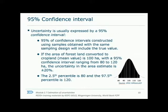What I was talking about before — the region that we believe the estimates to be within on a certain confidence level — is also known as the confidence interval, often expressed as a 95% confidence interval. This means that 95% of estimates from the same sampling design will include the true value. For example, 100 hectares plus or minus 20% gives a 95% confidence interval of 80 to 120 hectares.